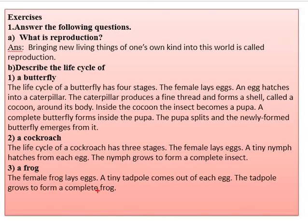The female frog also lays eggs. A tiny tadpole comes out of each egg. In the frog's life cycle, from the egg we get a tiny tadpole, and then the tadpole grows to form a complete frog.